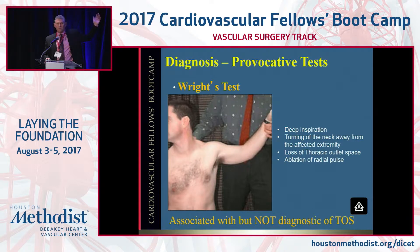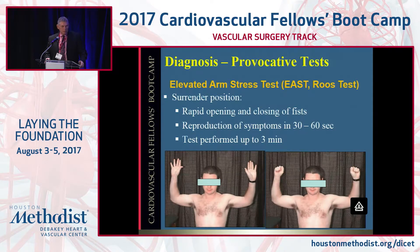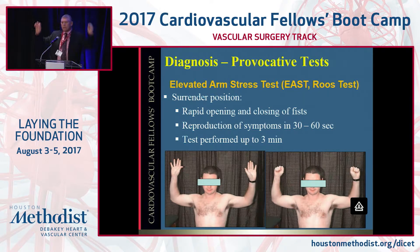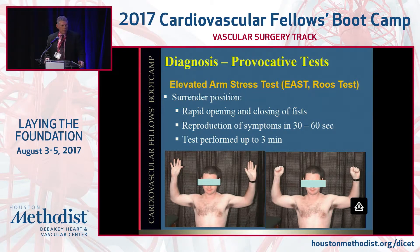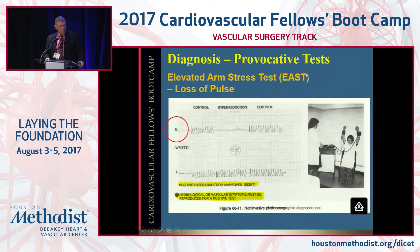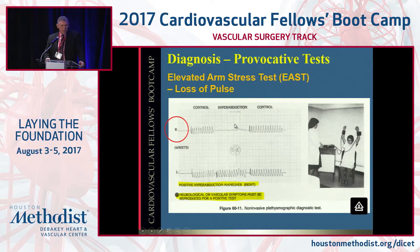You might also get replication of neurologic symptoms. You can do the ROOS or EAST test — the elevated arm stress test — which is the surrender position where opening and closing the hands causes them to become white or reproduce their symptoms. They can also have sagging of their arms. Most people should be able to hold their arms up for three minutes without dropping. If they begin to drop, there could be some arterial ischemia and muscle weakness related to that. Using plethysmography of the radial artery, you'll see a loss of pulse on the right, indicating a positive test for possible compression in the costoclavicular space.